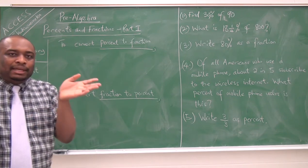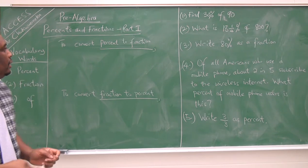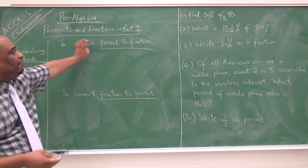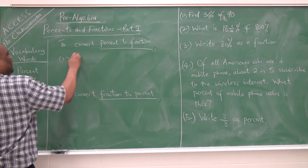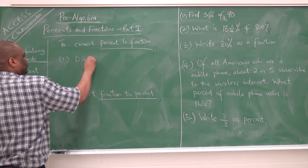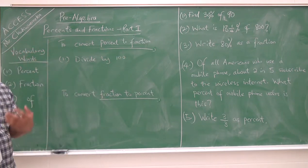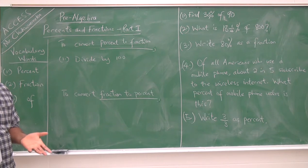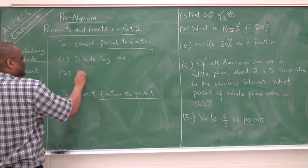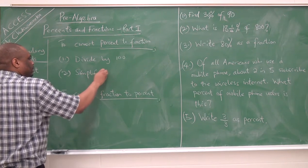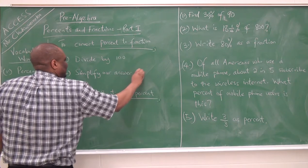Because percent means something out of 100, it already gives us the fraction. So when we want to convert percent to fraction, the first thing we do is we divide by 100, and then we simplify our answer as a fraction.